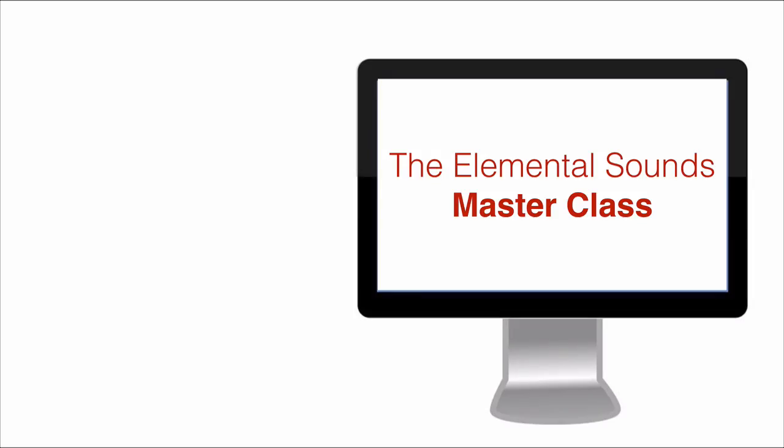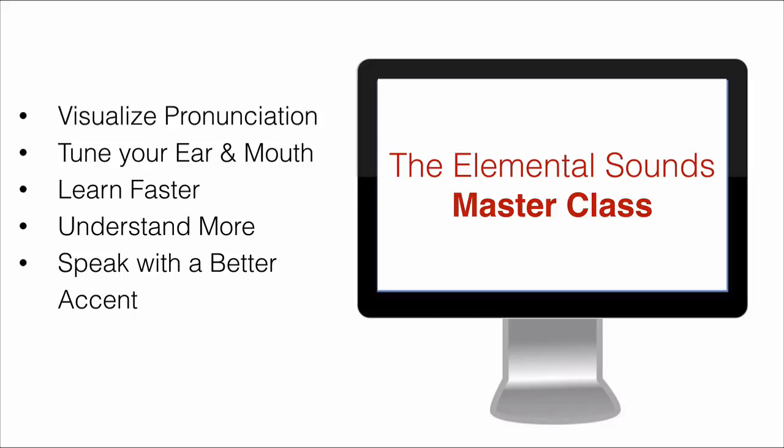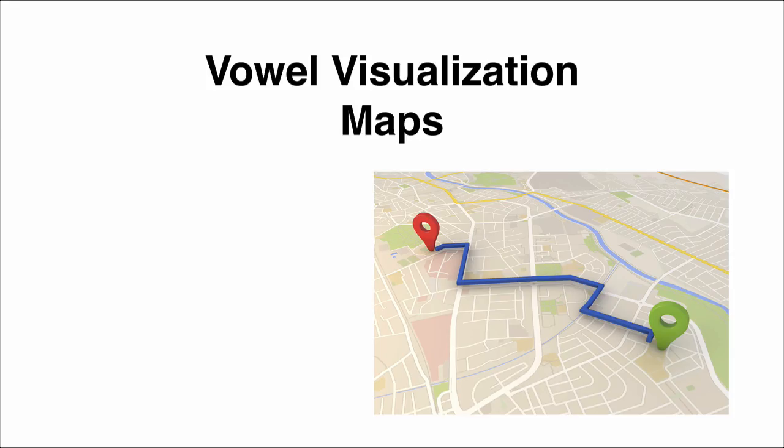And that, my friend, is precisely what you learn to do in our Elemental Sounds Master Classes. In it, we help you visualize pronunciation by giving you the proper maps and diagrams of the mouth. With this visualization, you'll be able to tune your ear and mouth to match the native speakers. Then, with perfectly tuned hearing and pronunciation, you'll be able to learn faster, understand more, and speak with a better accent. Now to achieve this, there are quite a few maps and concepts you'll need to learn, more than we can cover today. But to give you a taste, we've created another free resource for you, vowel visualization maps.